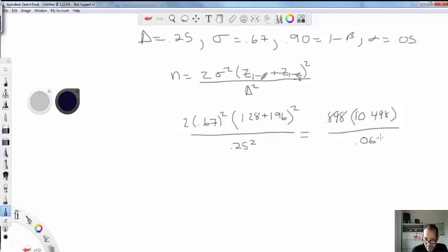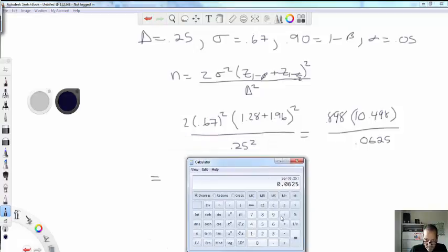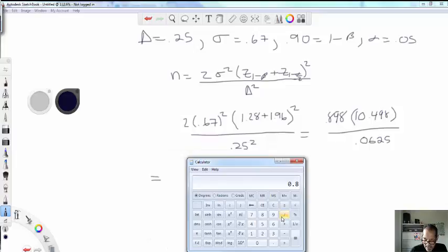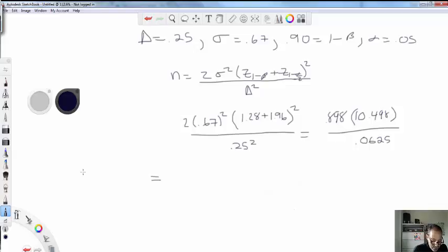10.498 squared, that's 9.43 basically. And this is divided by 0.0625. So this gives us, let's finalize this. We get 0.898 times 10.498, that's 9.43. And this is divided by 0.0625, it gives us 150.835.